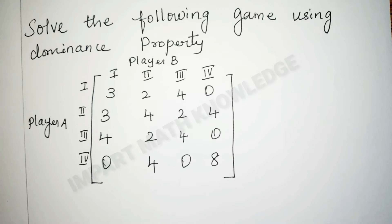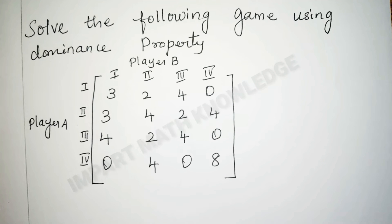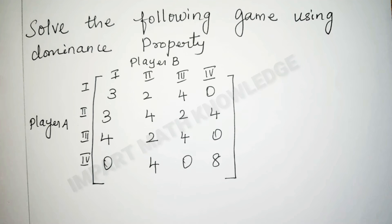In this problem we have to apply the dominance property directly. The dominance property is: delete the lesser row and greater column, because player A maximizes minimum guaranteed gain, and at the same time player B minimizes maximum loss.